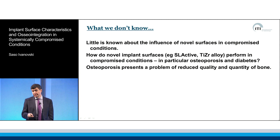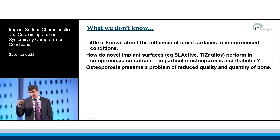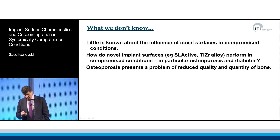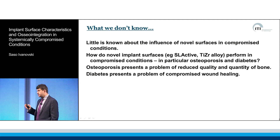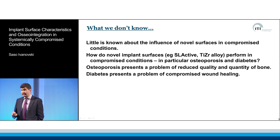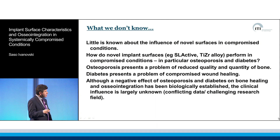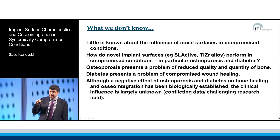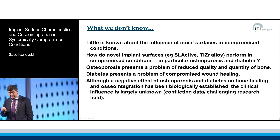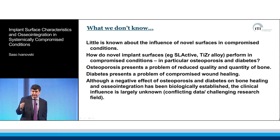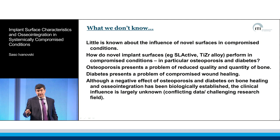Why are these a problem? Osteoporosis is a problem because the quality and quantity of mineralised tissue is reduced, and diabetes is a problem because, as most of you appreciate, wound healing is significantly compromised under diabetic conditions. Although we know that osteoporosis and diabetes have a negative effect on bone healing and osteogenesis — this has been biologically established — the clinical influence is relatively unknown.